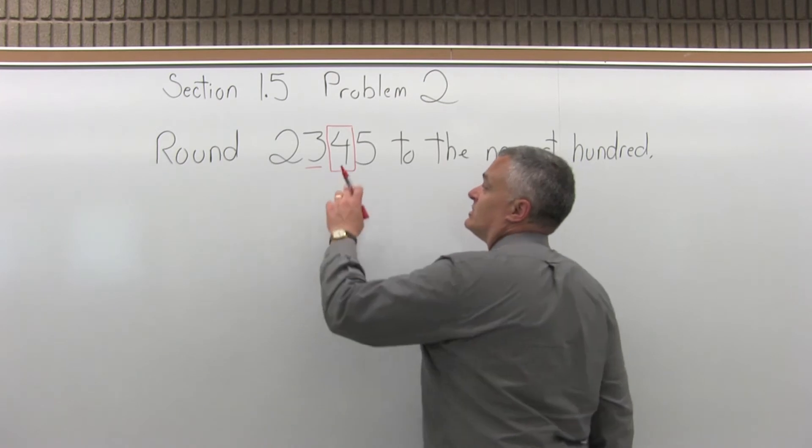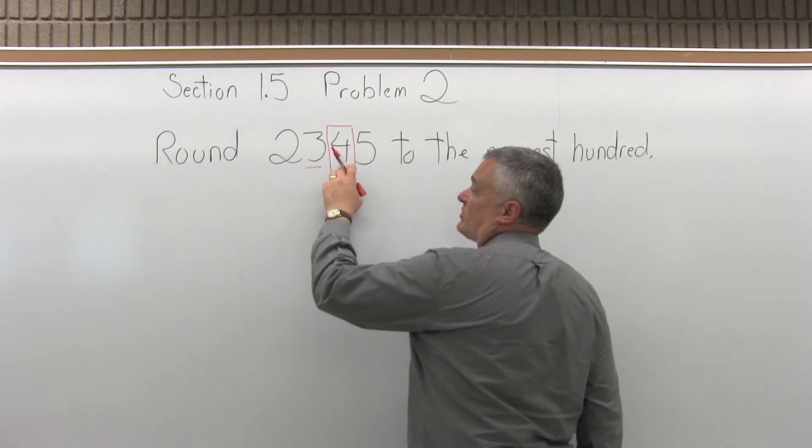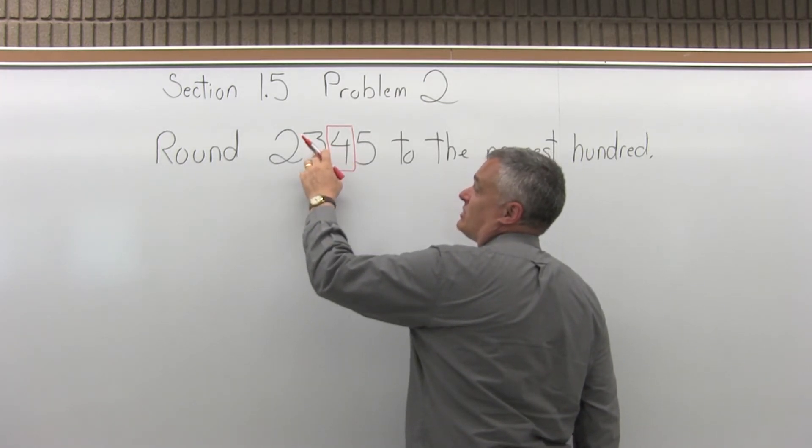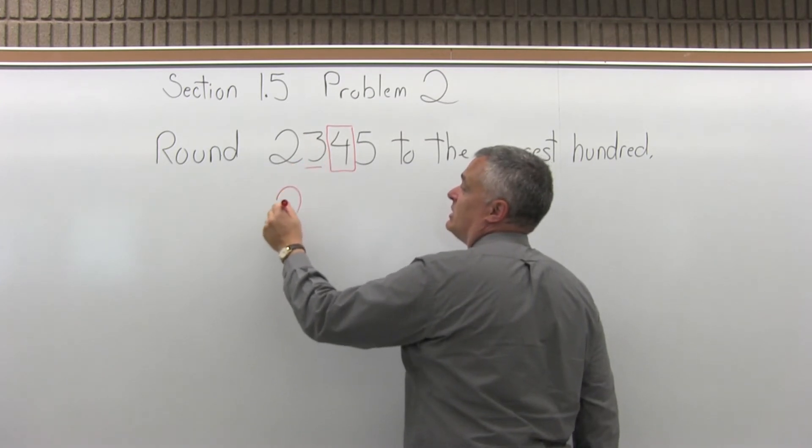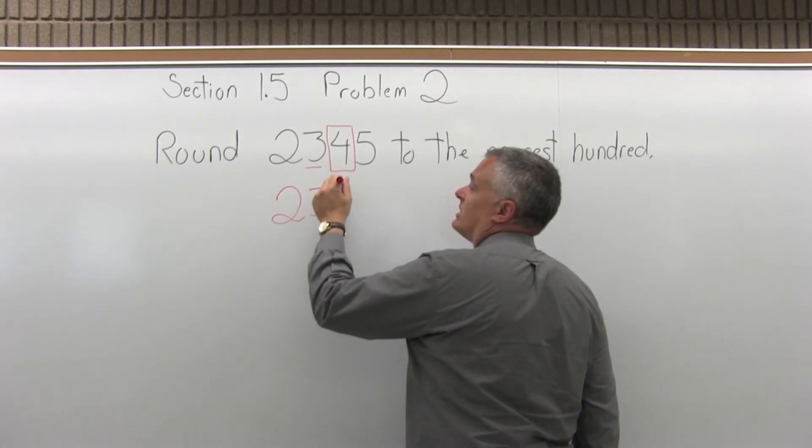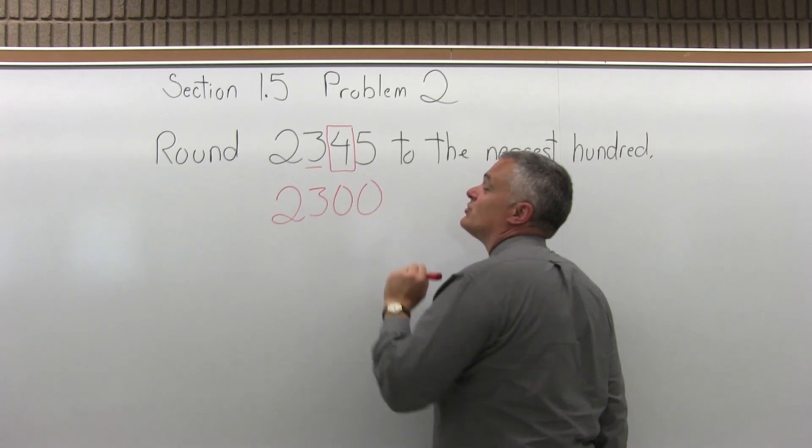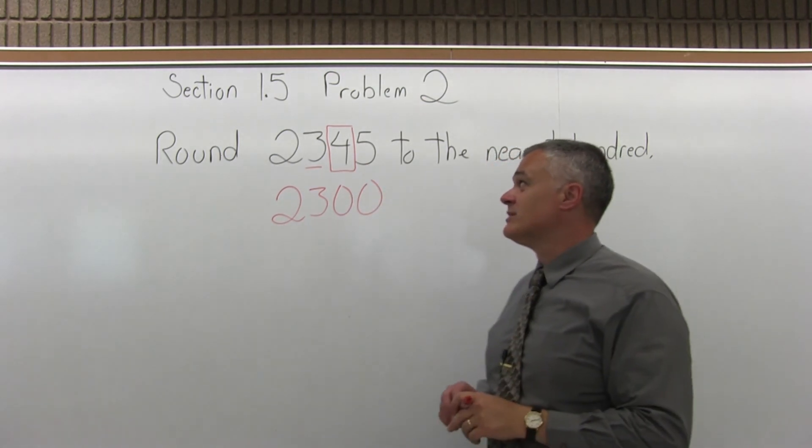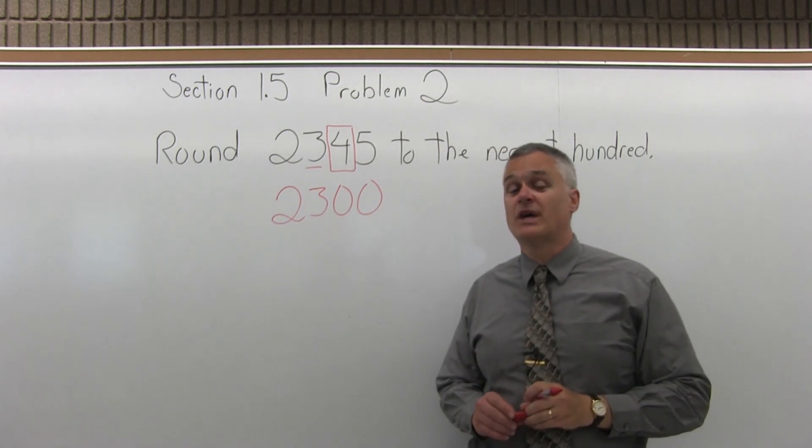Since we have the first case where it's zero, one, two, three, or four, it is not big enough to make this 2,400. So the answer, rounded to the nearest hundred, is 2,300.